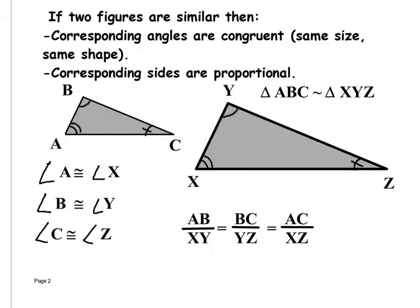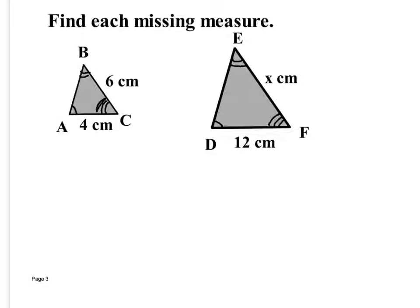This is mostly what your homework will ask: find a missing measure. There may be one or two problems with two missing measures, but for the most part it's just one. Also be aware that in the notes they just give you the sides you need — that won't always be the case. Sometimes they'll give you sides you don't need, so make sure you know which ones to use. We need to find side EF.